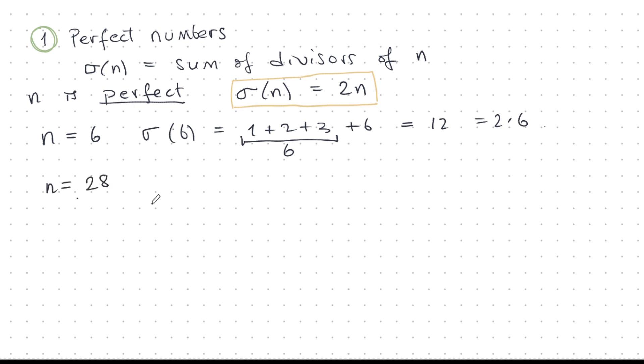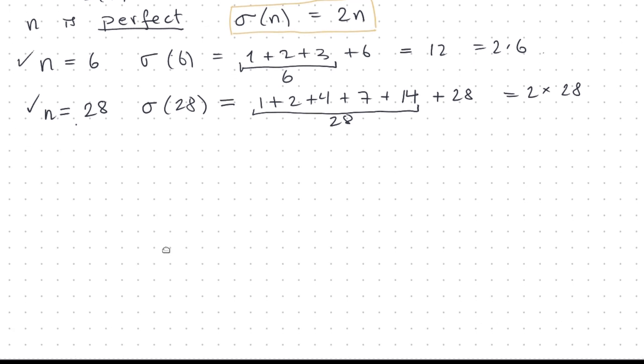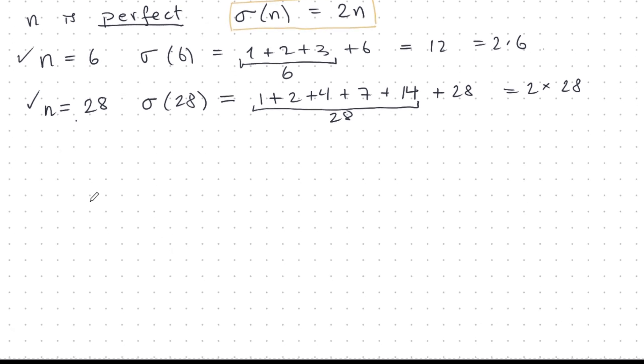Let's try n is 28. The sum of the divisors is 1 plus 2 plus 4 plus 7 plus 14, that's 28, plus 28. Well, that's 2 times 28. So 28 is perfect, just like n is 6. Perfect numbers are interesting because there are several very notorious unanswered questions about them that I'll talk about later.